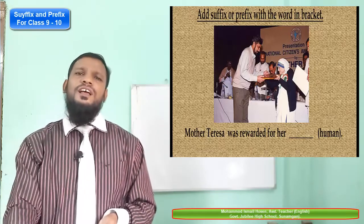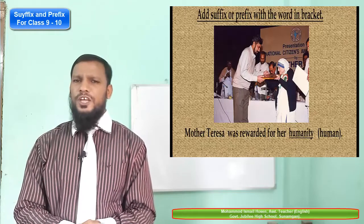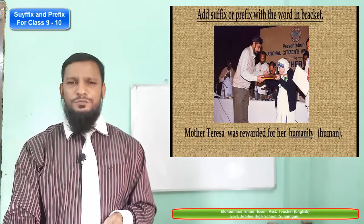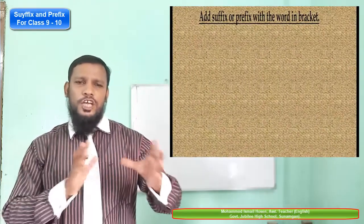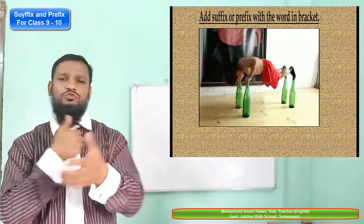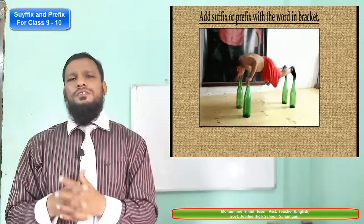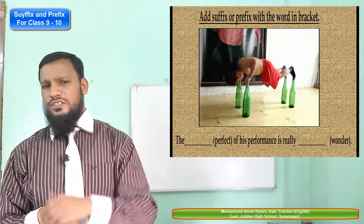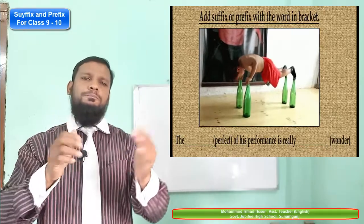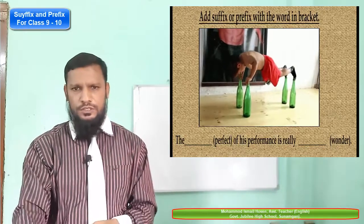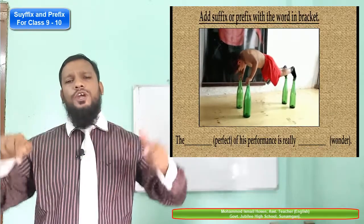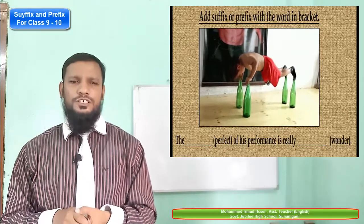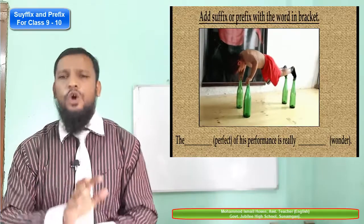In the picture, a man is taking exercise very exceptionally. 'The perfection of his performance is really wonderful.' 'Perfect' plus '-tion' — 'i-o-n' — gives 'perfection'. '-ion' is the suffix here. The perfection of his performance is really wonderful.